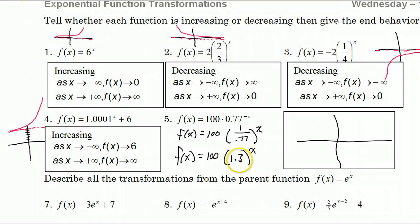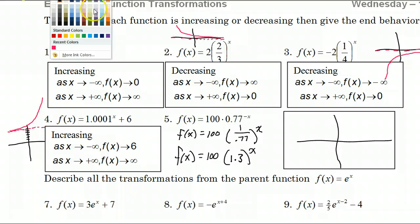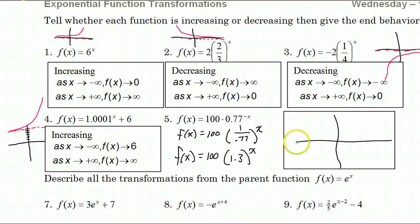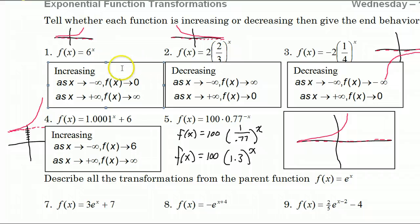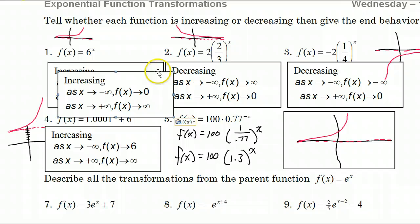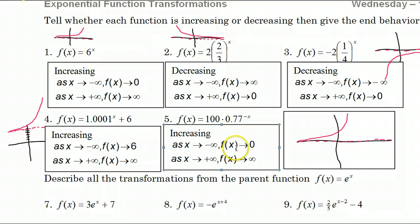As I do my sketch, I'm going to draw a graph that is increasing. There's no number being added on the end or subtracted, so the asymptote is still zero. This is an increasing graph. On the left, the graph is in fact approaching zero. As we go to the right, it is going up into the sky, so that should be infinity.